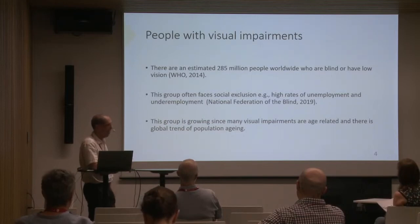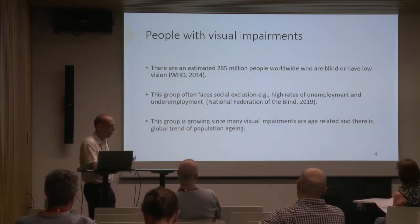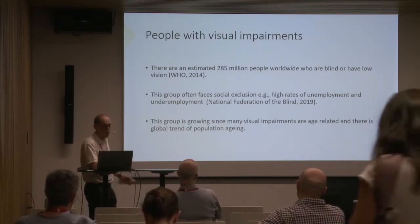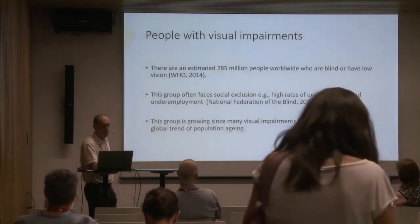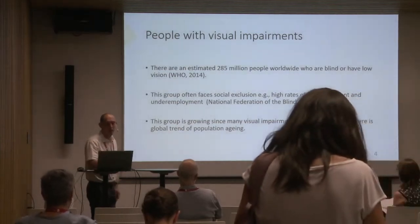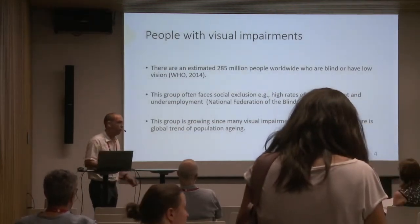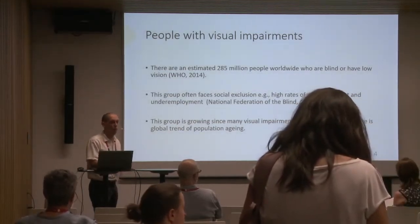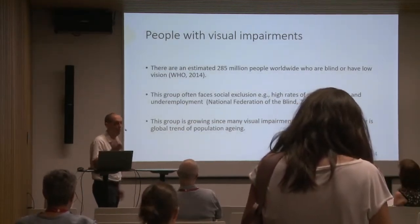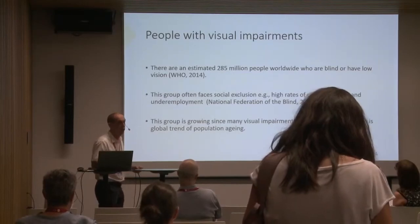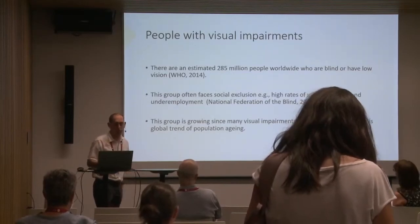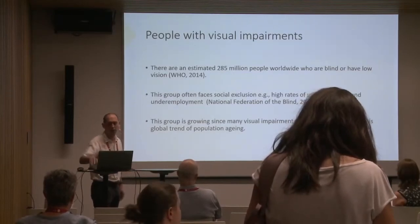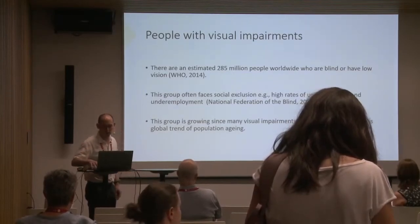People with visual impairments are often socially excluded. They have high rates of underemployment and unemployment. And it's a growing group because we're all getting older, and many of the conditions which cause visual impairments are age-related.